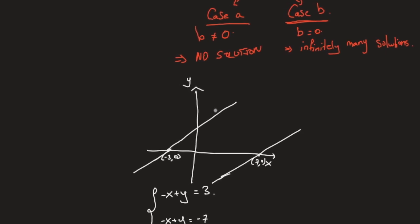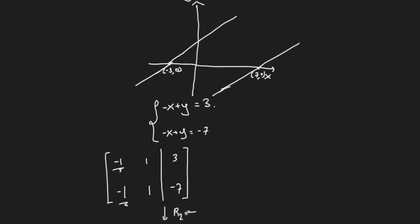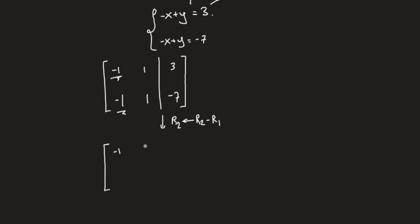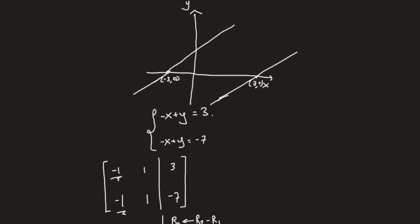Looking at the augmented matrix: [−1, 1 | 3] and [−1, 1 | −7]. We replace r2 with r2 − r1. The first row stays the same, while the second row becomes: −1 − (−1) = 0, 1 − 1 = 0, and −7 − 3 = −10. So the last row is all zeros except for b = −10, which is non-zero — and hence we have no solution. This is case A, when b is not zero.